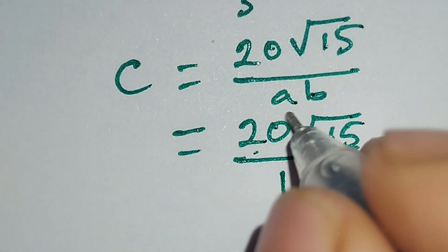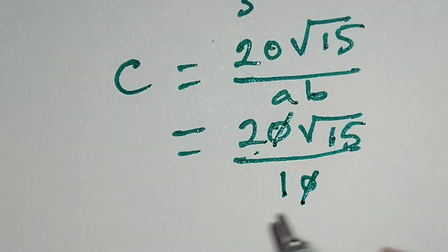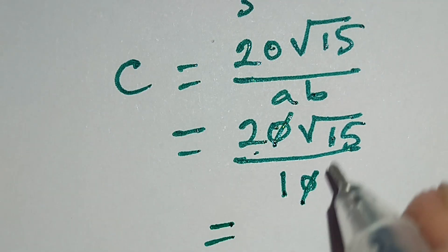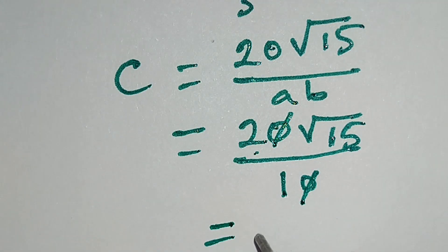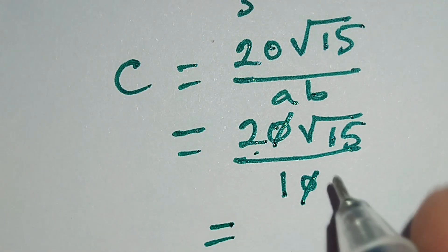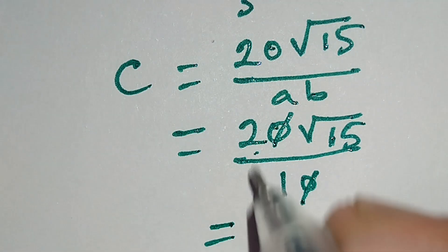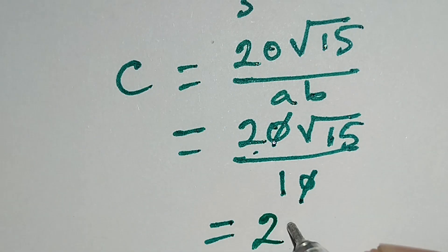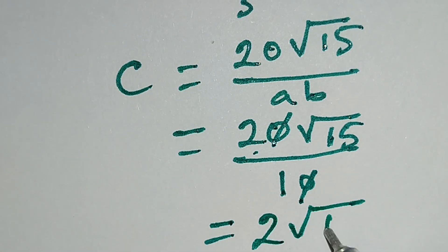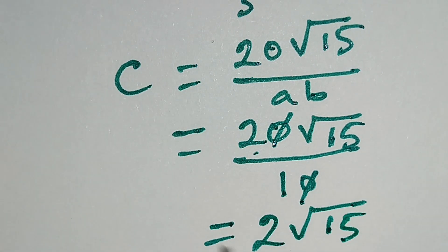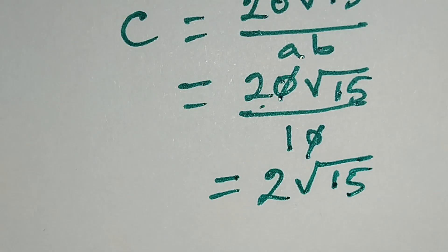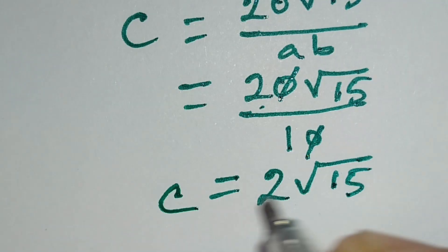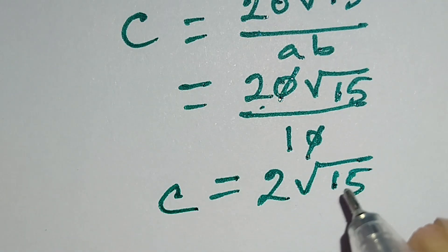C equals ABC over AB, which is 20 square root of 15 over AB. AB equals 10, so C equals 20 square root of 15 over 10. This 0 and this 0 cancel out, leaving 2 square root of 15. So C equals 2 square root of 15.